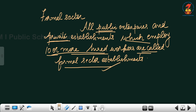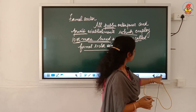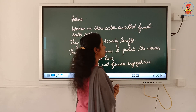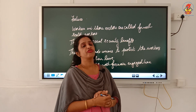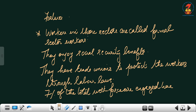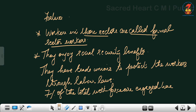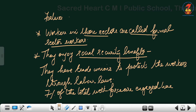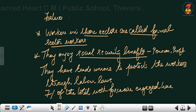Now let us see the important features of formal sector establishments. The workers in these sectors are called formal sector workers. They enjoy social security benefits such as pension, provident fund, and medical insurance.